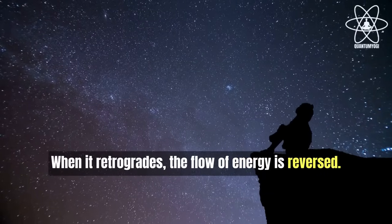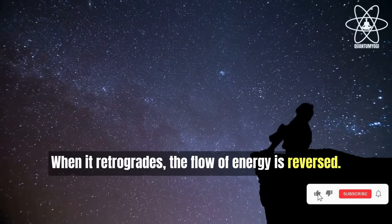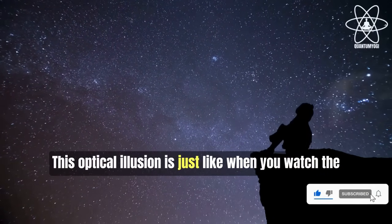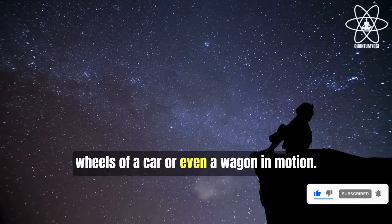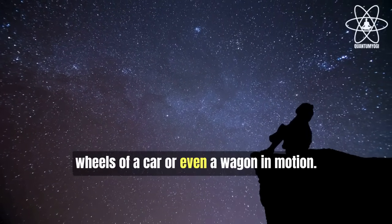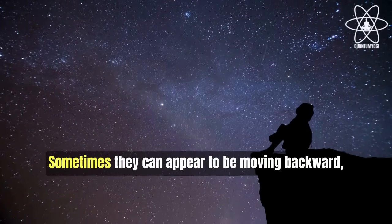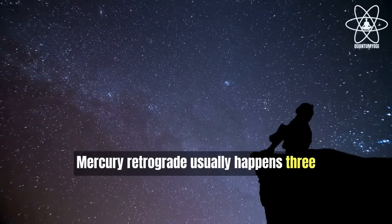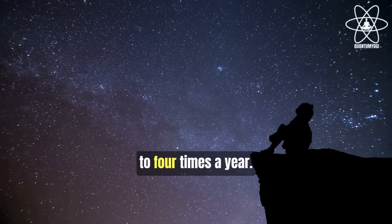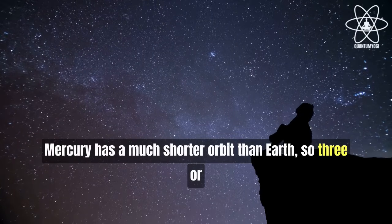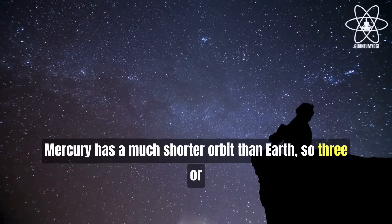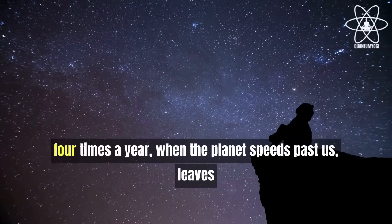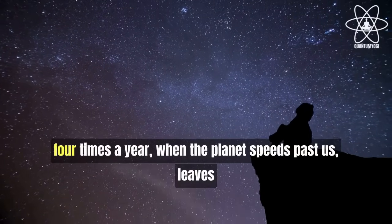This optical illusion is just like when you watch the wheels of a car or even a wagon in motion. Sometimes they can appear to be moving backward even when the car is moving forward. Mercury retrograde usually happens three to four times a year. Mercury has a much shorter orbit than Earth, so three or four times a year when the planet speeds past us, it leaves behind a strong wind that shakes up our lives if you're in a low vibrational state.